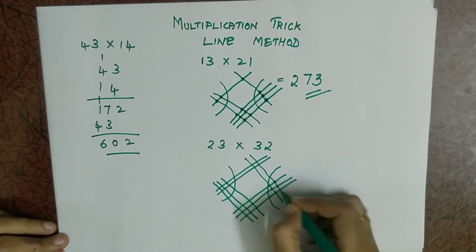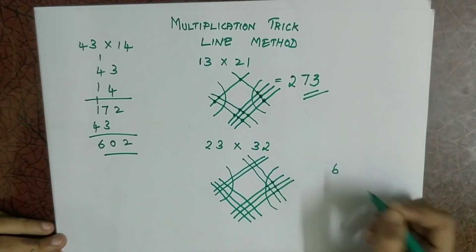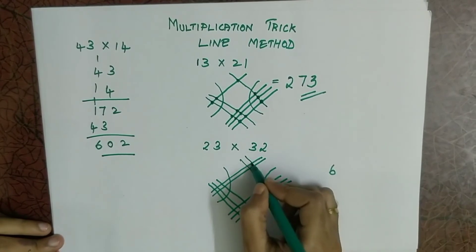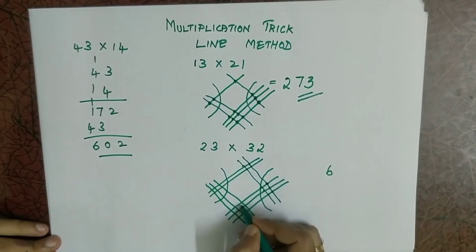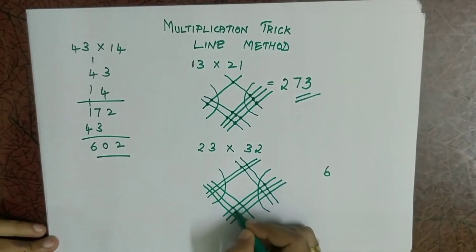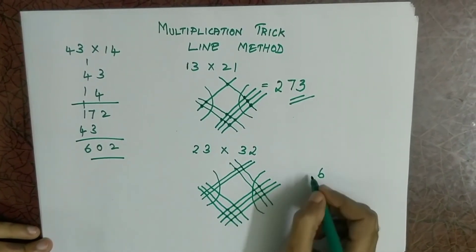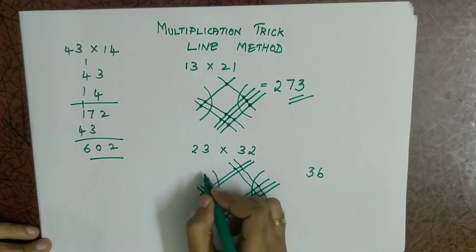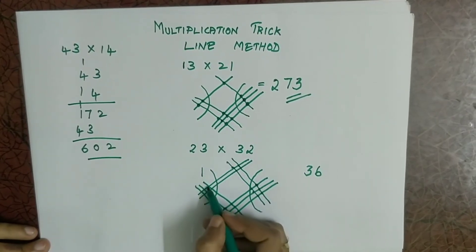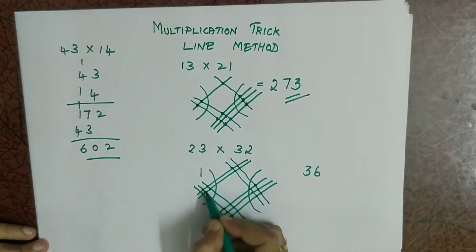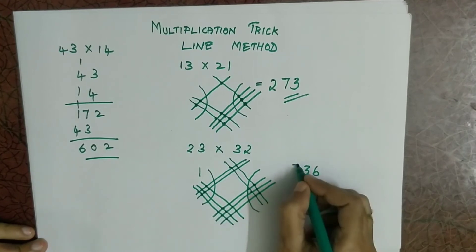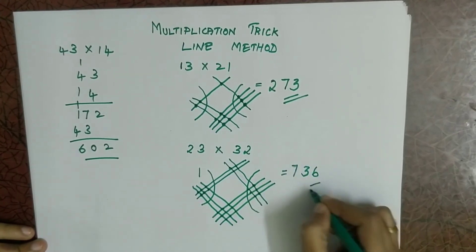1, 2, 3, 4, 5, 6. So the last number is 6. Then middle, 1, 2, 3, 4, 5, 6, 7, 8, 9, 10, 11, 12, 13. So 3 and 1 remainder. So 1, 2, 3, 4, 5, 6 and 7. So your answer is 7, 3, 6.